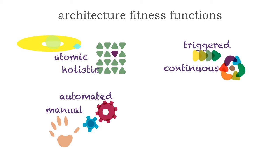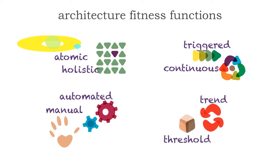Fitness functions could also be automated or manual. Not every fitness function has to be automated. Some things — such as measuring scalability and the number of crashes — when a system crashes, it's really hard to automate the capture of that information, so some of these may be manual. Also, trend versus threshold: are we looking for a fitness function measuring a particular trend, which is preferable because it eliminates outliers, or are we looking for a particular threshold number for scalability or performance?